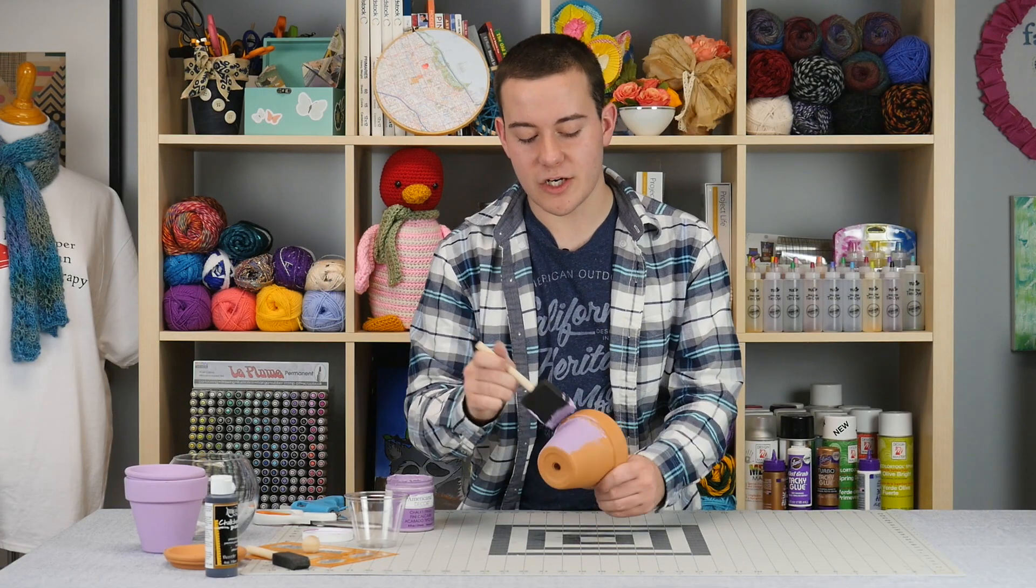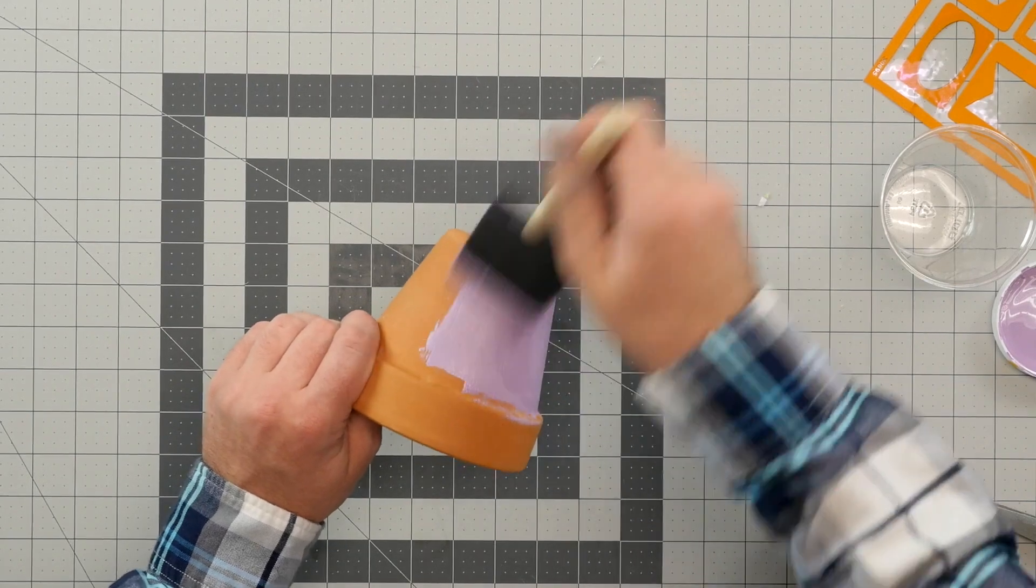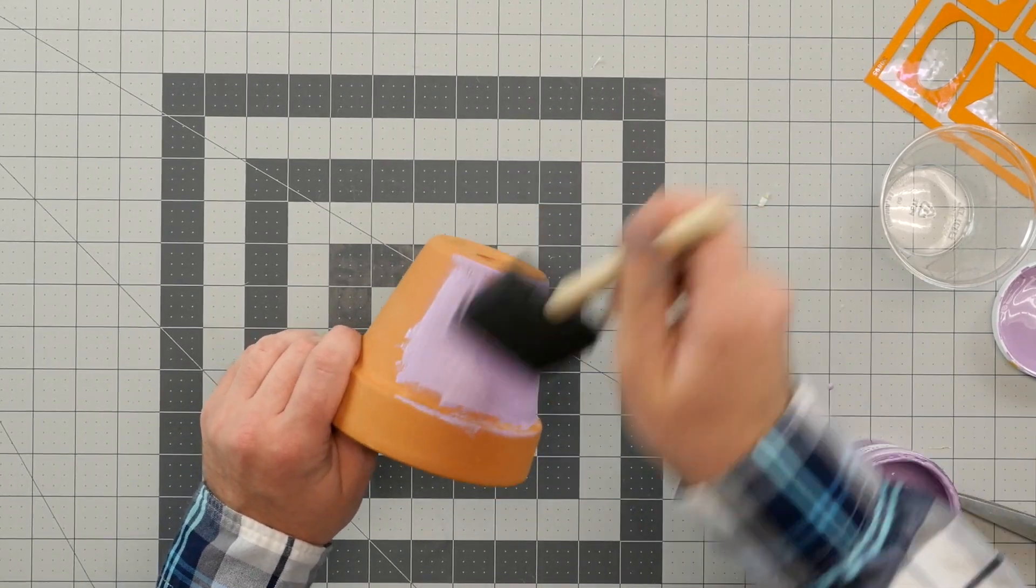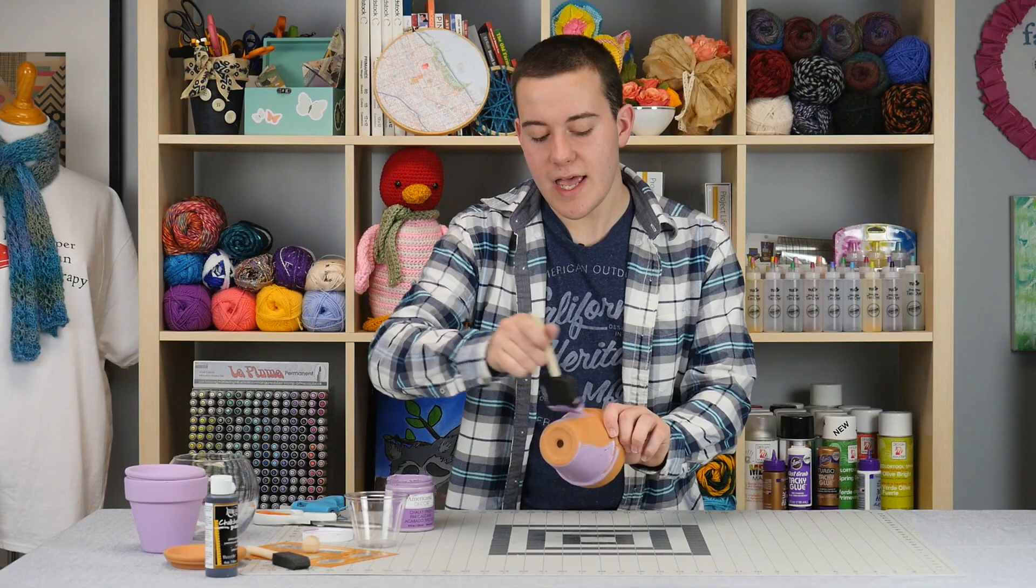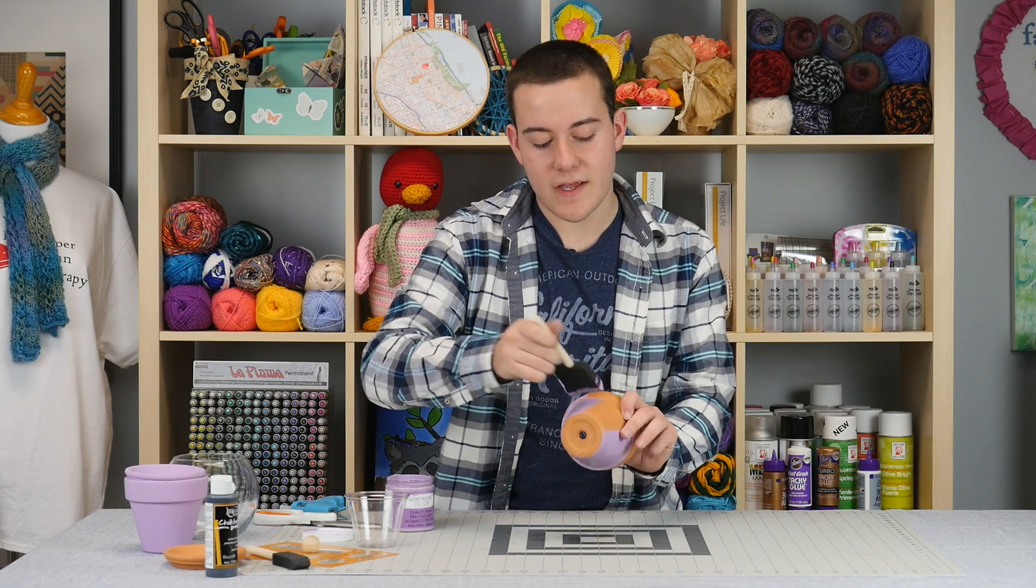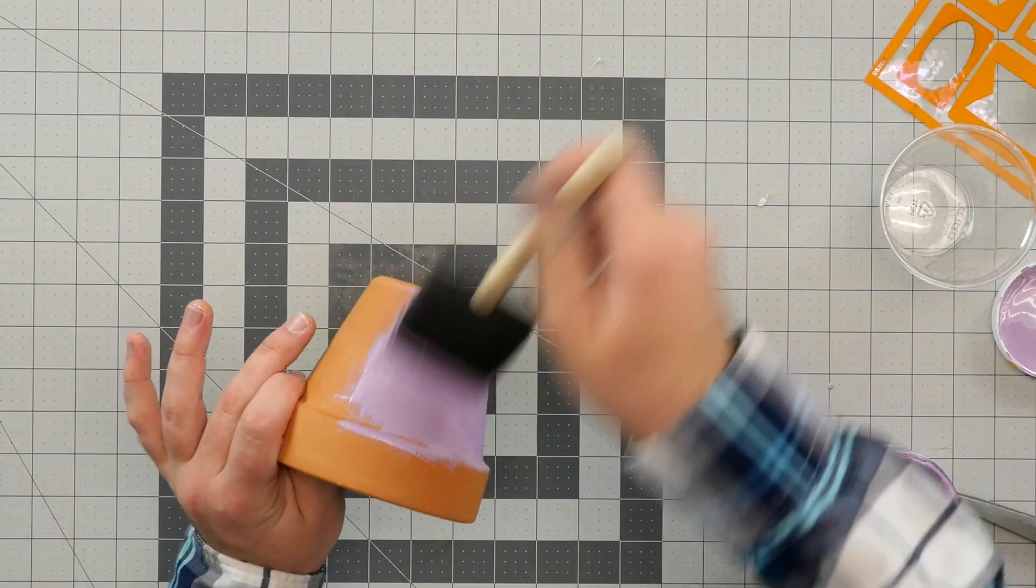I love using chalky finish paint on terracotta because it is an unfinished surface and regular acrylic paints just seep into the terracotta and it takes a ton of coats. Chalky finish is not like that.